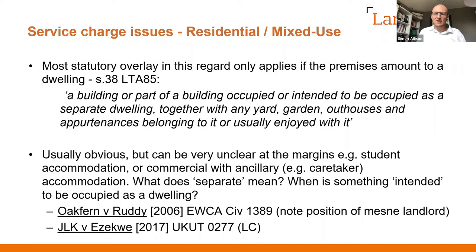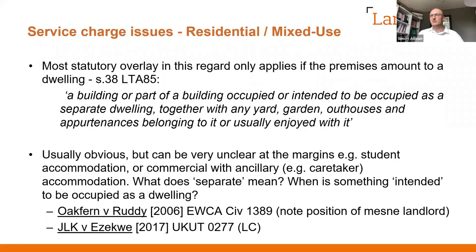The JLK case is a good example of what's meant by 'intended to be occupied as a separate dwelling.' In that case it was student accommodation at issue. The student accommodation consisted of a bedroom with its own bathroom but with shared living space and shared kitchen. The Upper Tribunal found that those properties were dwellings but not separate dwellings because they didn't have separate living space and kitchen, and therefore weren't caught by the residential overlay. It's always going to be fact and context sensitive, so there can be some really interesting grey areas.